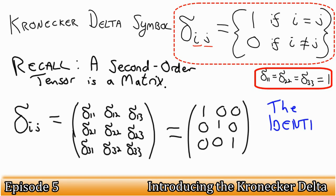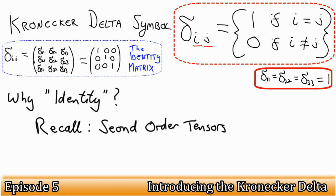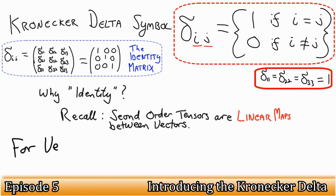This matrix is special. It is called the identity matrix. Why identity? What does that mean? Recall again to episode 1, where we defined a second order tensor as a means of changing one vector into another vector. If we multiply any vector by the identity matrix, we get the exact vector we started with. In a sense, its identity does not change.